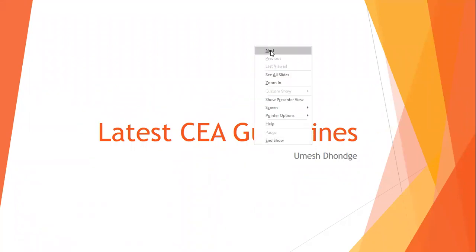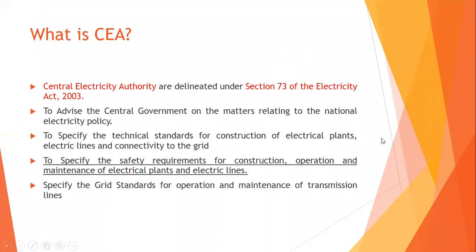CEA is the Central Electricity Authority, which comes under Section 73 of the Electricity Act 2003 and was formed by the central government in 2000. The role of CEA is to advise the central government on matters relating to the national electricity policy and to specify technical standards for construction of electrical plants.